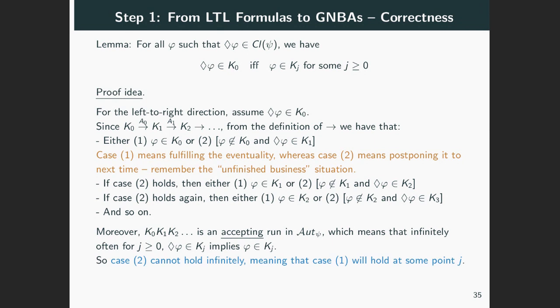So case two cannot go on forever, since this would mean that for all j, eventually φ is in Kⱼ but φ is not, which would contradict the above. In other words, case one has to hold at some point. So we obtain a j such that φ is in Kⱼ, which is what we were looking for. So the proof of the implication is done.